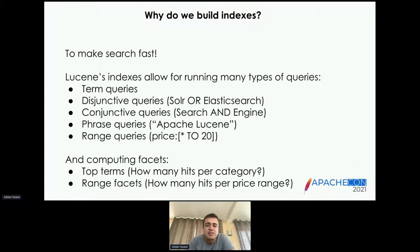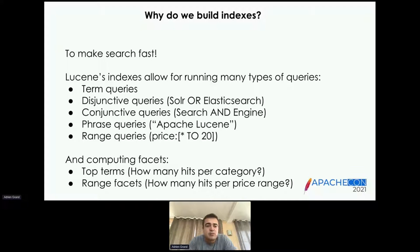That's what we're going to discuss today. Lucene's indexes allow for running many types of queries — term queries, disjunctive, conjunctive, phrase, and range queries — all exposed in Lucene's classic query parser. Lucene also allows computing facets, top terms, and more. These represent basic and most common usage of Lucene, and we're going to look at a few tips and tricks to make these queries return results almost instantaneously, no matter what the size of your data set is.